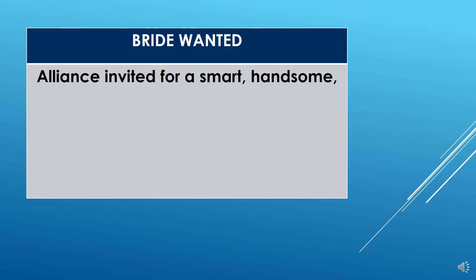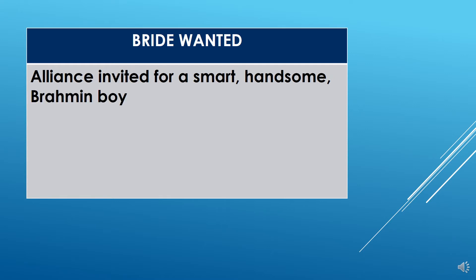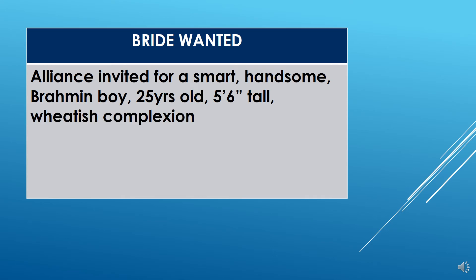We write 'Alliance Invited For A Smart Handsome Brahmin Boy.' First, we write the caste — Brahmin boy. We write the age — 25 years old. We write the height — 5 feet 6 inches tall. We write the complexion — fair complexion. These details cover the physical appearance: smart, handsome, Brahmin boy, 25 years old, 5'6" tall, fair complexion.